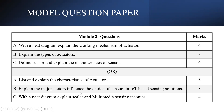Explain the major factors influencing the choice of sensors in an IoT-based sensing solution. Here you will be writing about sensor considerations, because for each and every application there are some considerations of sensors that have to be maintained. You will be writing all those in detail, which has 8 marks in total.